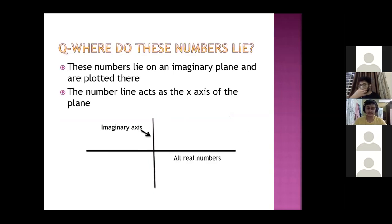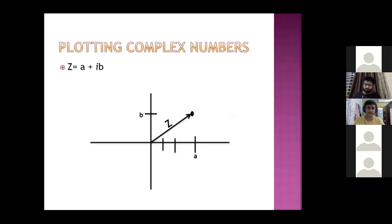We have two-dimensional numbers instead of one dimension. All the real numbers are in one line, but all the complex numbers are in this plane. We plot an imaginary number with the real part and the imaginary part. This plane is called the Argand plane.